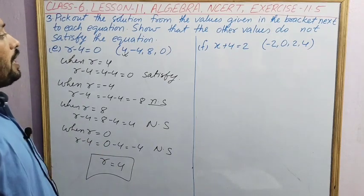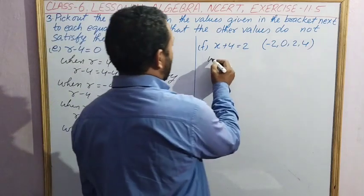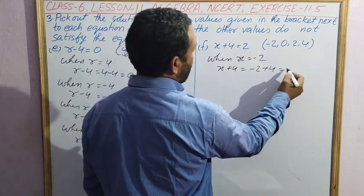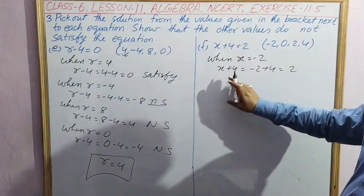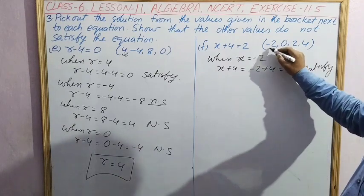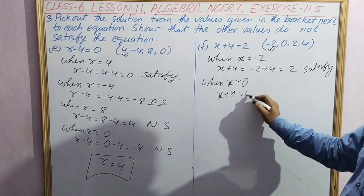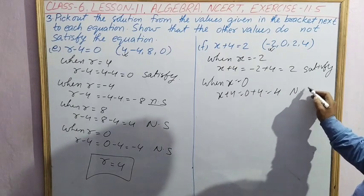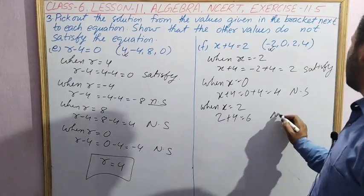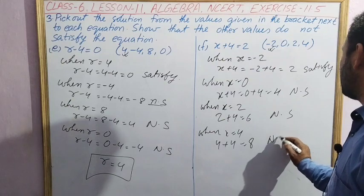Question F: x plus 4 equal to 2. Values are minus 2, 0, 2 and 4. When x equal to minus 2, x plus 4, in place of x we put minus 2: minus 2 plus 4 equal to 2. So this one is satisfying the equation. When x equal to 0, x plus 4, that is 0 plus 4 equal to 4, not satisfying. When x equal to 2, that is 2 plus 4 equal to 6, not satisfying. When x equal to 4, 4 plus 4 equal to 8, also not satisfying.